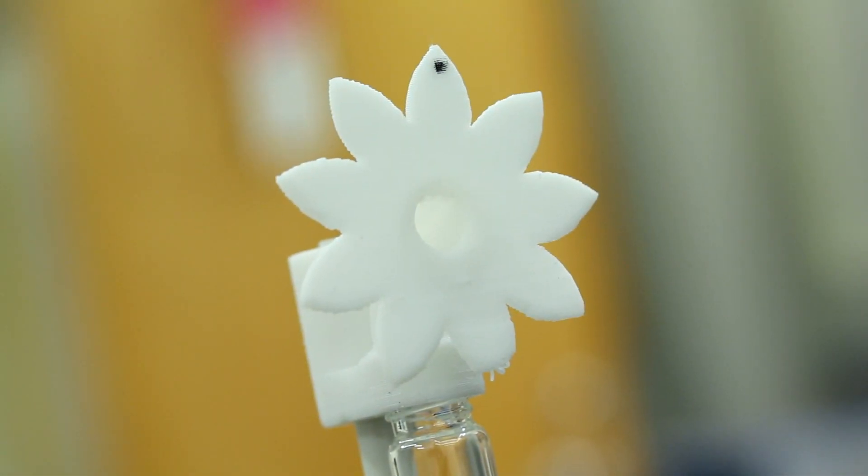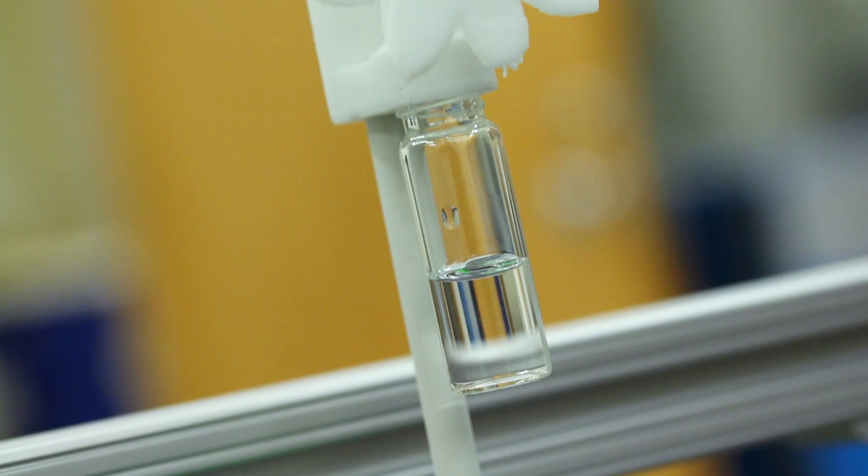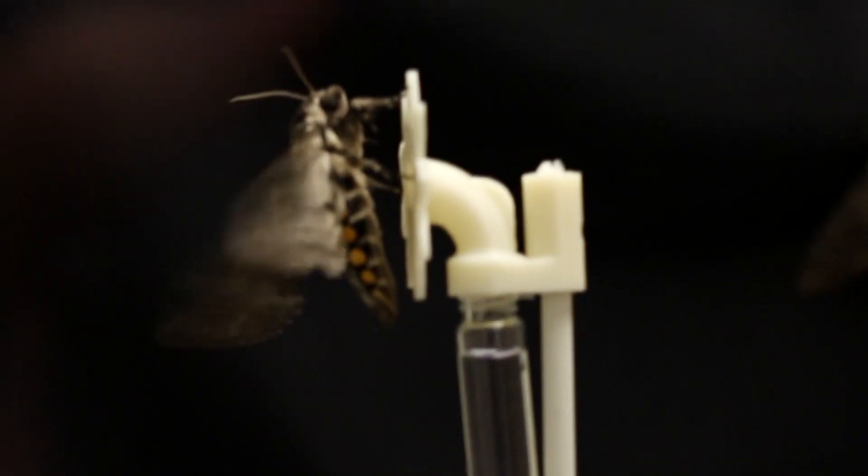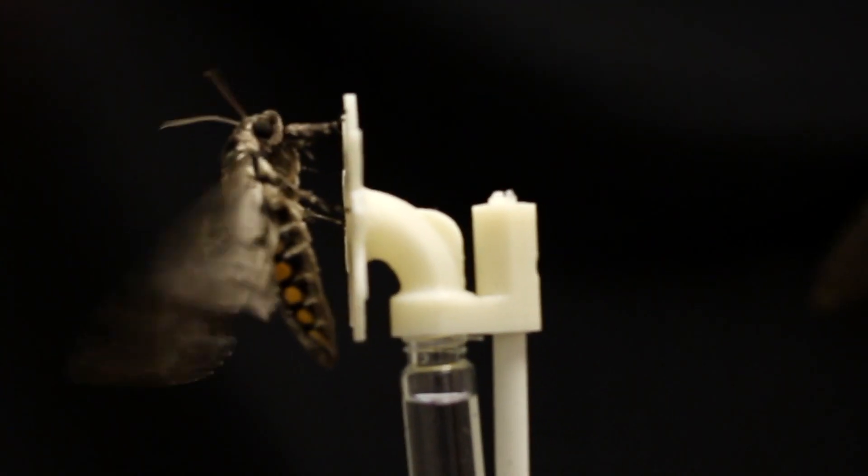What we did is we made robotic 3D printed flowers. We used a 3D printer, printed out flowers, filled them with nectar. We needed to supply a large amount of nectar so that the moth would feed from them for a while so we could characterize their flight performance over a period of time.